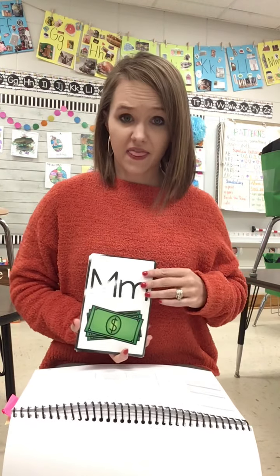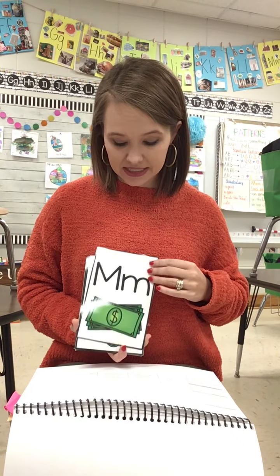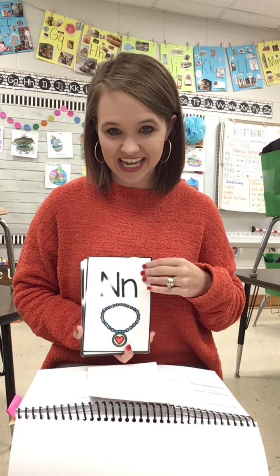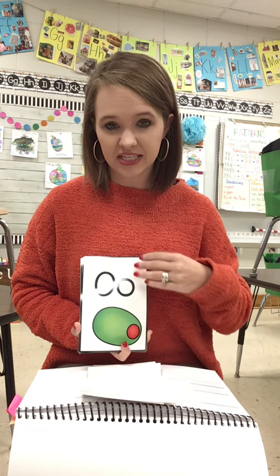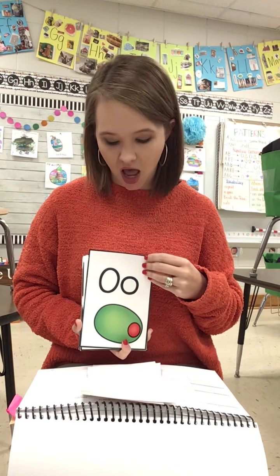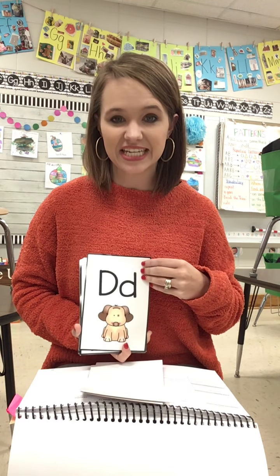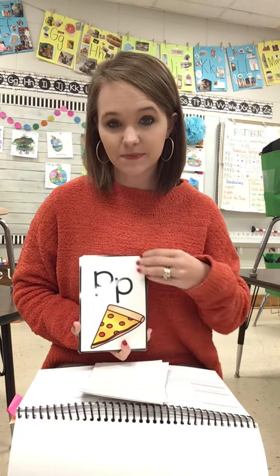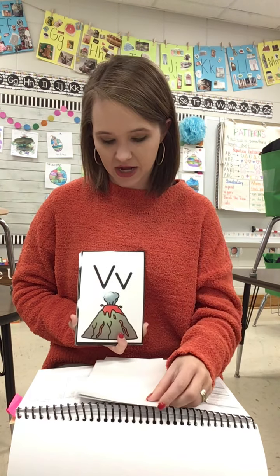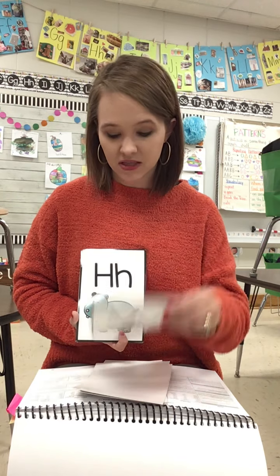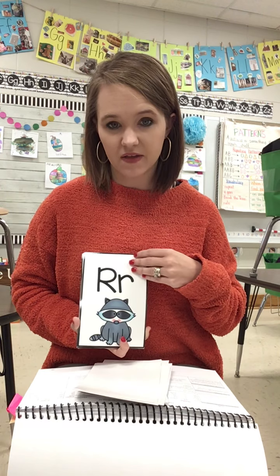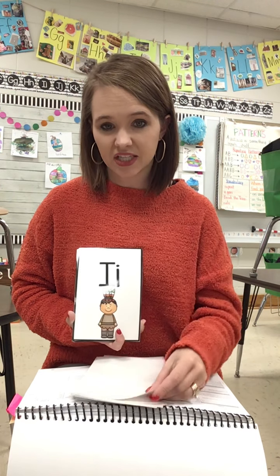All right, let's go through our letters. We're gonna say the letter name and the letter sound. The letter is m. The sound is m. The letter is n. The sound is n. The letter is o. The sound is aw. The letter is d. The sound is d. The letter is p. The sound is p. The letter is v. The sound is v. The letter is h. The sound is h. The letter is r. The sound is ur.